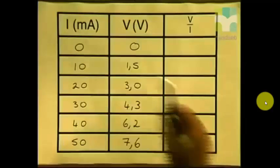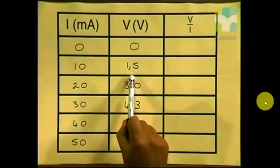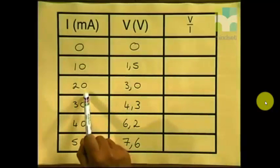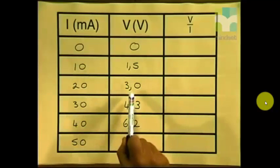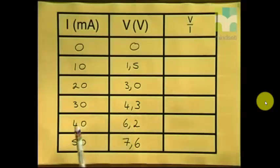I am sure you all saw how he took those readings. Now I am going to go to my table and show you the readings that I actually collected. My first reading of 10 mA, I recorded 1.5 volts. My next reading of 20 mA, I obtained a reading of 3.0 volts. 30 mA gave me 4.3 volts. 40 mA gave me 6.2 volts. And my last reading of 50 mA gave me a reading of 7.6 volts.